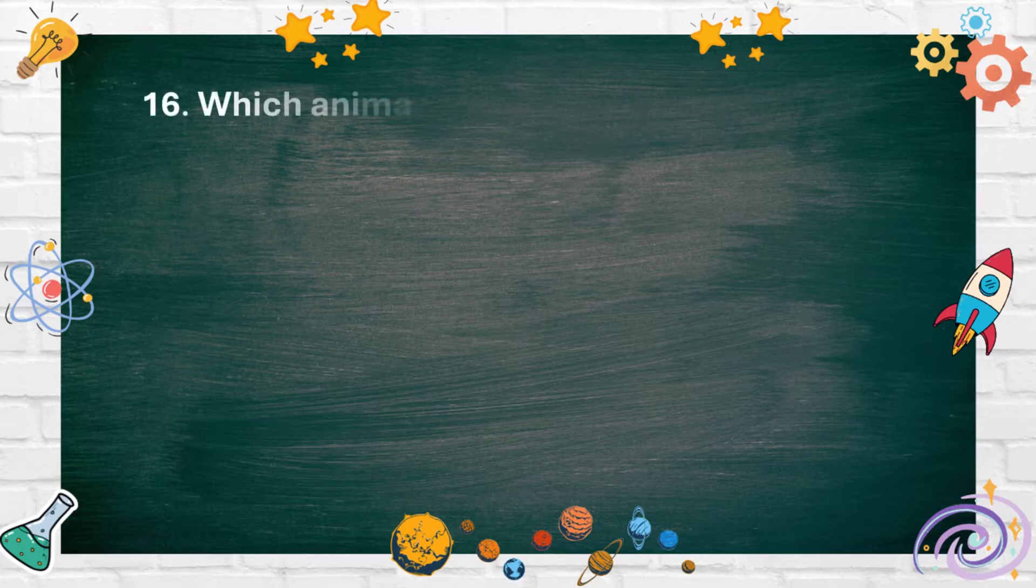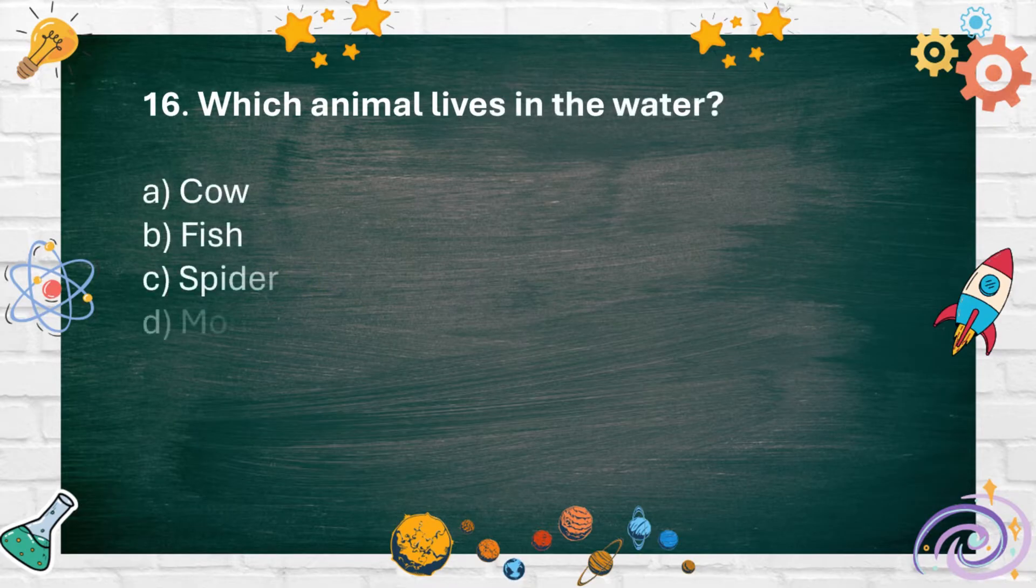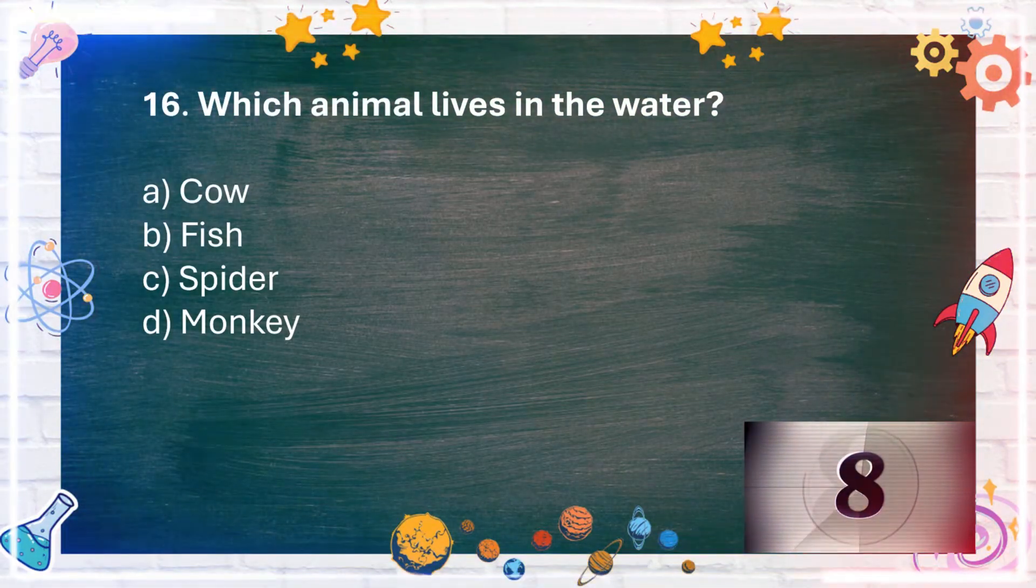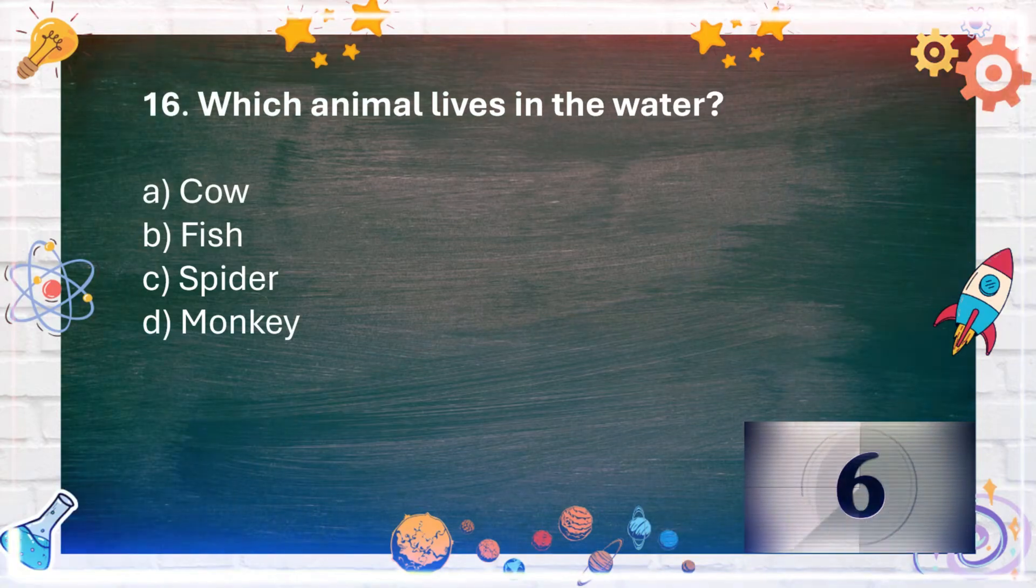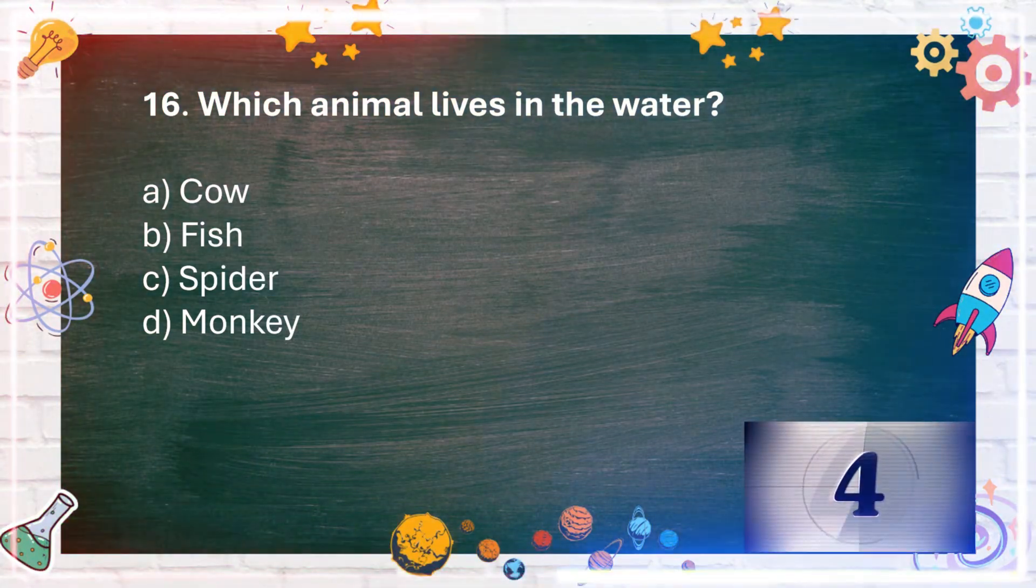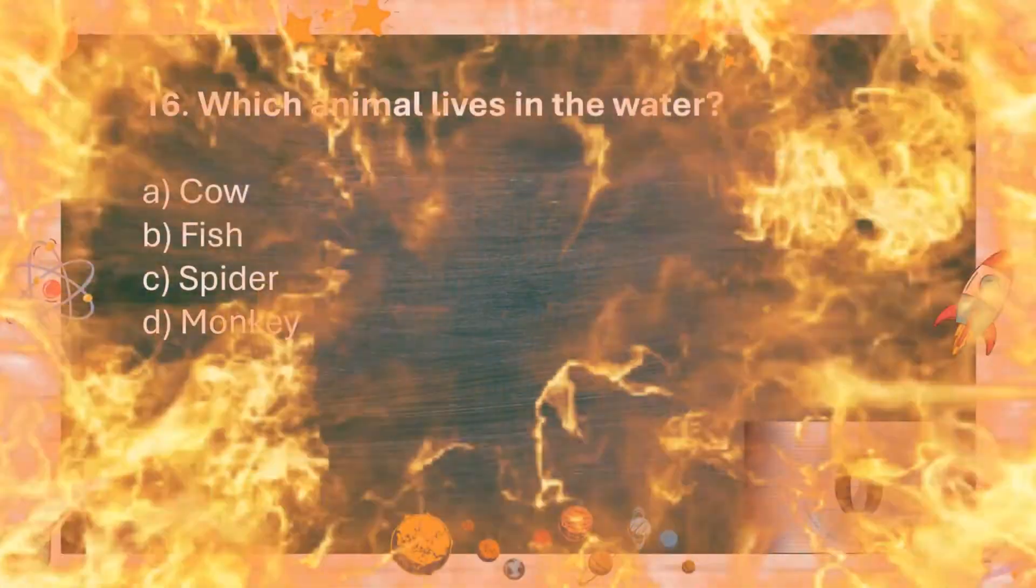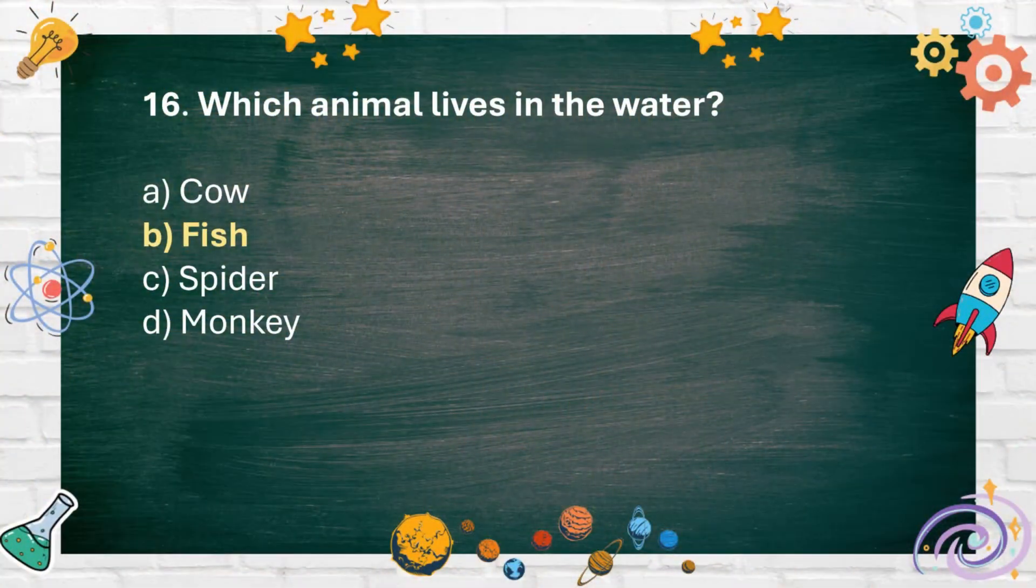Number 16. Which animal lives in the water? A. Cow B. Fish C. Spider D. Monkey. The answer is B. Fish.